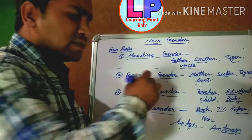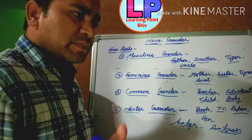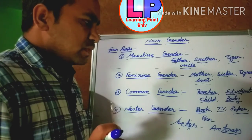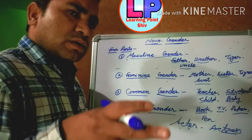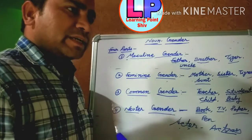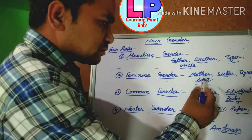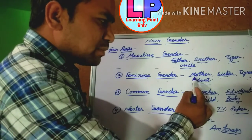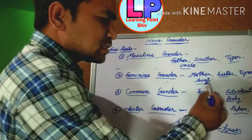Feminine gender — which is feminine gender? Words that denote females. Like mother, sister, tigress, aunt.